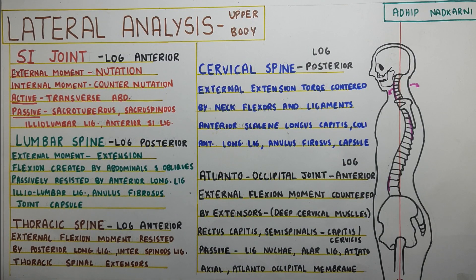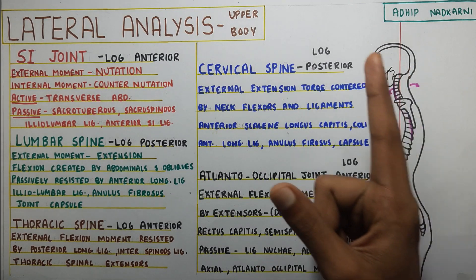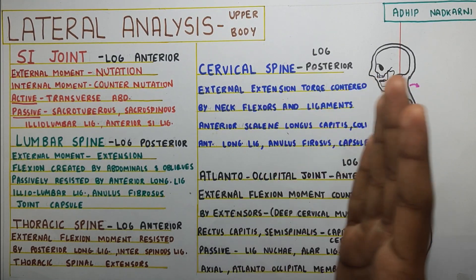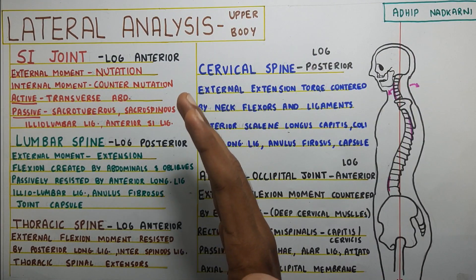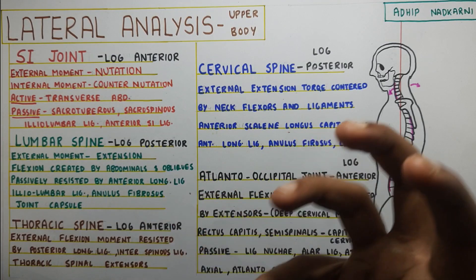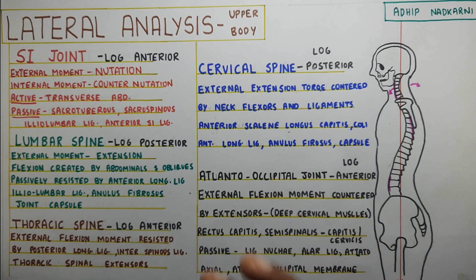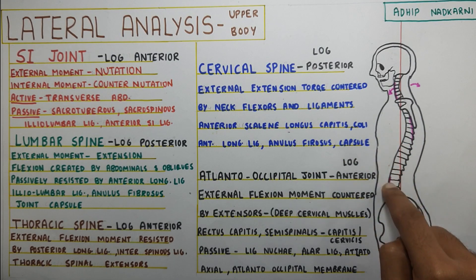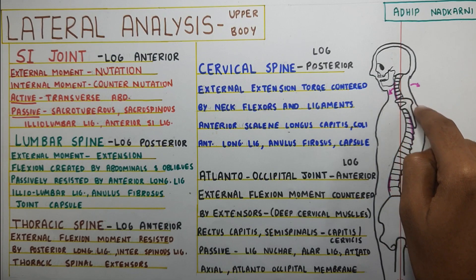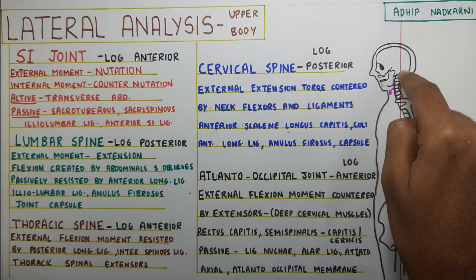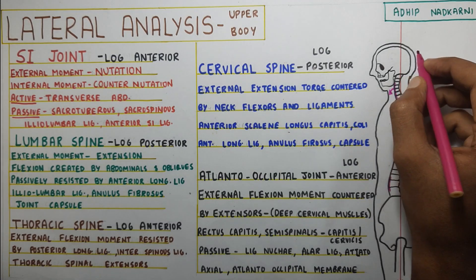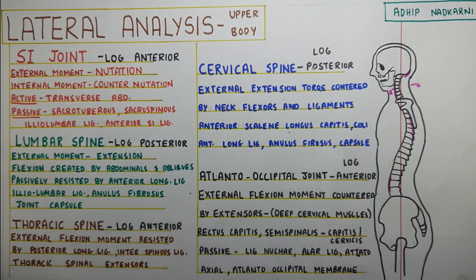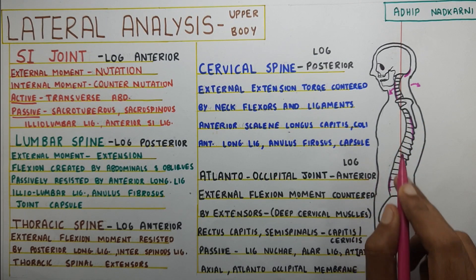Let's quickly summarize. The line of gravity keeps shifting between anterior and posterior. Two things prevent that excessive shift to either side: active and passive structures. The active structures are: transverse abdominis at the SI joint, abdominals going up, then spinal extensors, then cervical neck flexors, and then head extensors. The passive structures are all the ligaments we discussed.